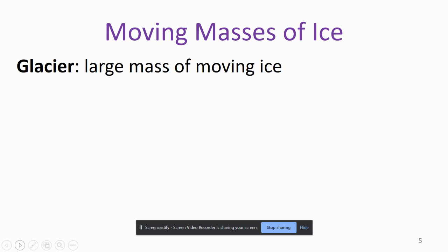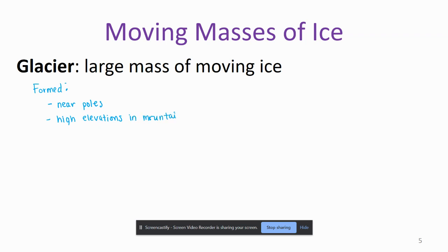A glacier is a moving mass of ice, and they can be formed near the poles and also at high elevations in mountains. So there are places in the world that you might think of as being warm, but the mountain regions might have a glacier just because of the elevation. Glaciers also cover 10 percent of Earth's surface.